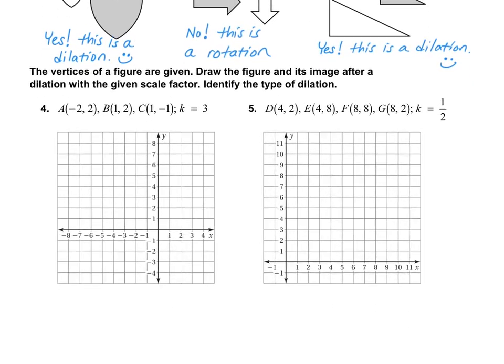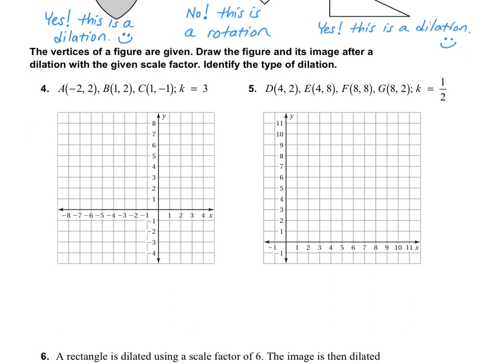Okay, let's take a look at the graphing. So in the graphing ones, it says the vertices of the figure are given. Draw the figure and its image after the dilation with the given scale factor and identify the type of dilation. So our first step is to graph the points that we are given.